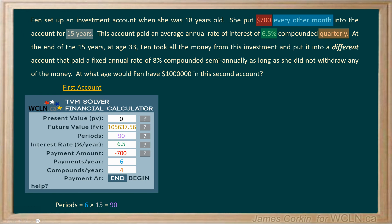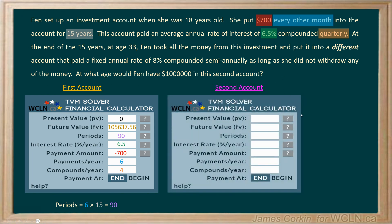Fenn is going to take all of that money from the first investment and put it into a different account. We'll open a new blank TVM and set the present value as a copy of the previous future value — notice it's negative again, because this money was briefly in Fenn's pocket when it came out of the first account, and then she deposited it into the new account.